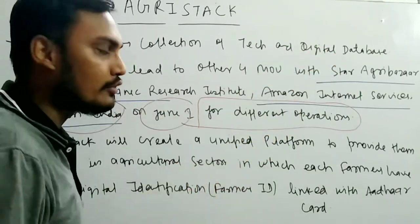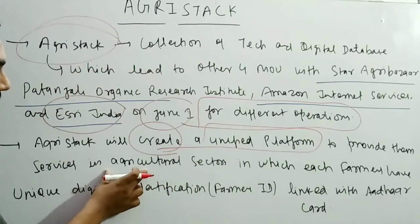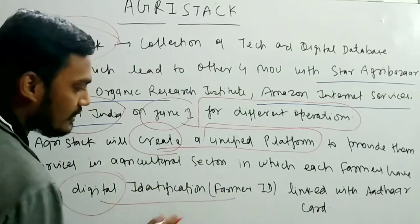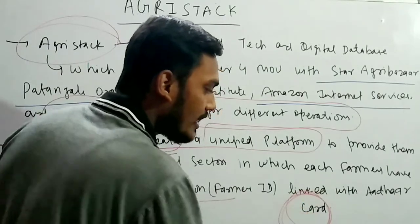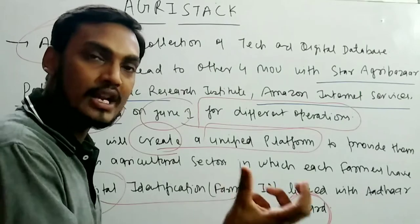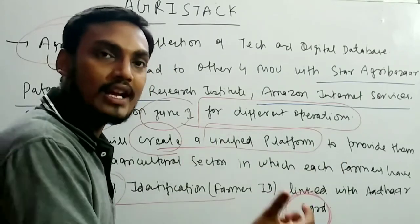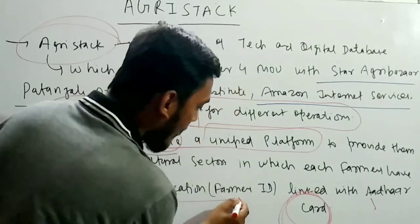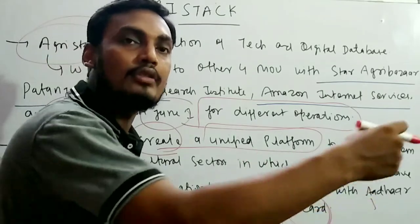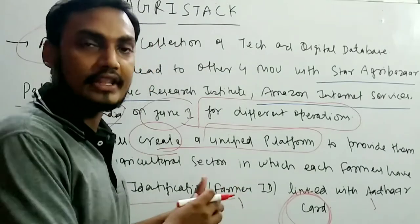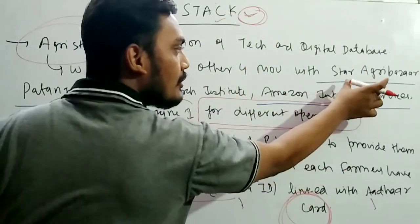Agri-Stack will create a unified platform for the agriculture sector. Each farmer will get a digital identification number known as the Farmer ID, which will be linked to the Aadhaar card. This creates a unified data system including personal details, bank account details, and everything related to the farmer. When the government launches schemes, benefits can go directly to beneficiaries without any middleman, like PM Kisan.